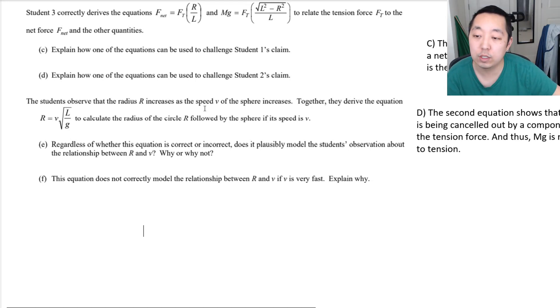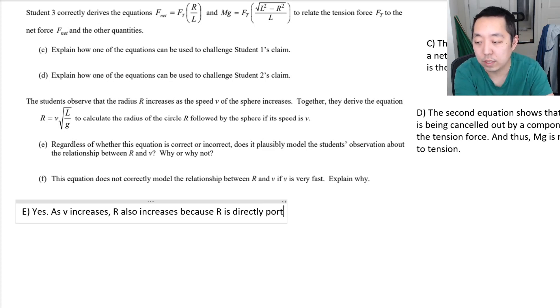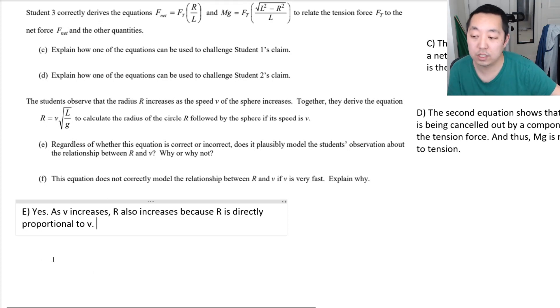The students observe that the radius R increases as the speed V of the sphere increases. Together, they derive the equation R equals V squared L over G to calculate the radius of the circle followed by the sphere if its speed is V. Regardless of whether this equation is correct or incorrect, does it plausibly explain the student's observation about the relationship between R and V? So, what is the observation that they see? They see that R increases as V increases. And they want to know if that equation explains that specific relationship. Yes, and it does, because as V increases, R also increases. Because R is directly proportional to V. As V goes up, R increases. That's pretty much all they're saying, if that's true.